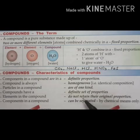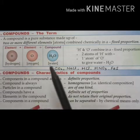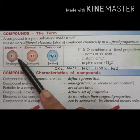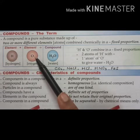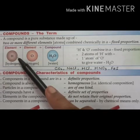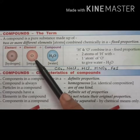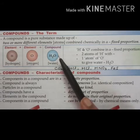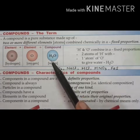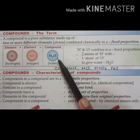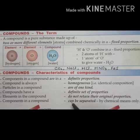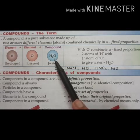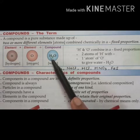Compounds have a definite set of properties — water taken from any place always has the same properties. Also, elements in a compound do not retain their original properties. Water is made up of hydrogen, which is a highly inflammable gas, and oxygen, which supports burning. But when these two combine in a fixed proportion to form water, water extinguishes fire. Finally, components in a compound can be separated by chemical means only — you cannot separate hydrogen and oxygen from water by physical means.